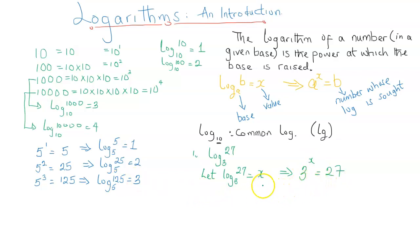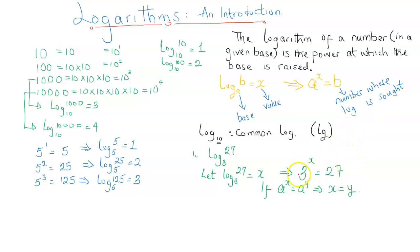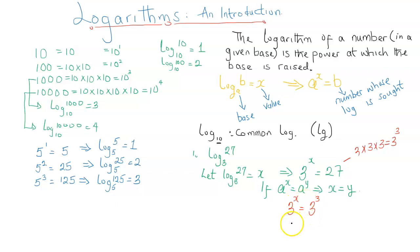From basic indices, if a to the power of x equals a to the power of y, it implies x equals y — that is, if the bases are the same, the indices will also be the same. So what we can do here is write 27 as a number to the power of 3. This is straightforward because 27 is 3 times 3 times 3, which is 3 cubed. So we have 3 to the power of x equals 3 to the power of 3. Since the bases are the same, we equate the indices, giving us x equals 3.